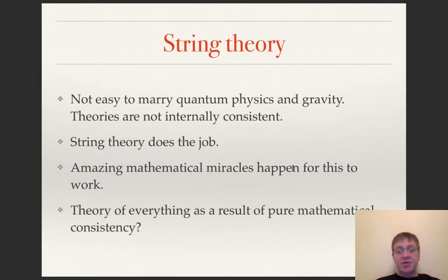However, it's not at all easy to cook up a theory which will have quantum physics and gravity at the same time, because most of such theories are simply not internally consistent, not mathematically consistent. It turns out that something called string theory does a very nice job unifying quantum physics and gravity, and for this to work, some amazing mathematical miracles have to happen. So the question is whether we can get this theory of everything as a result of pure mathematical consistency. And people try to work hard to achieve this dream of theoretical physics.